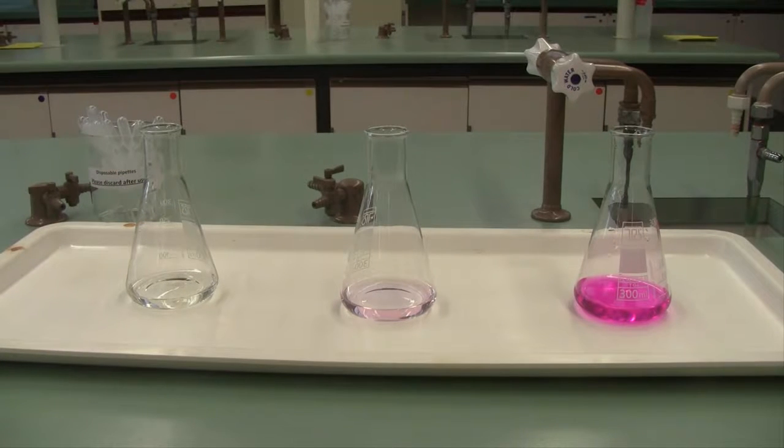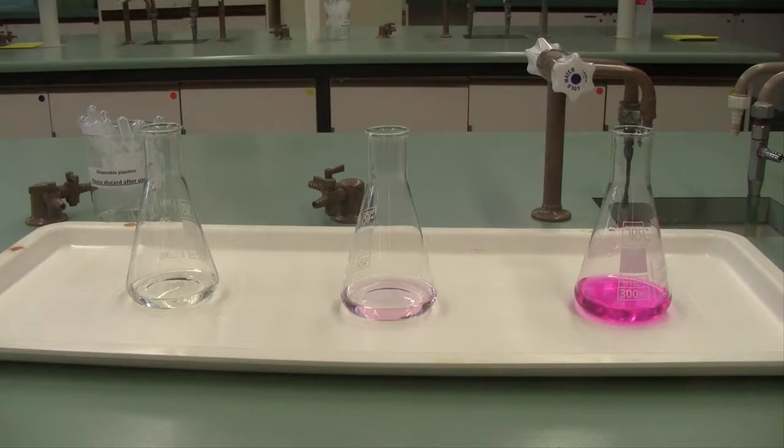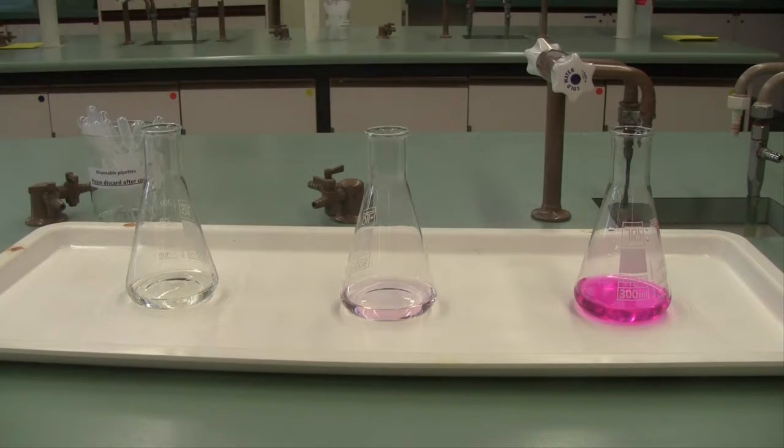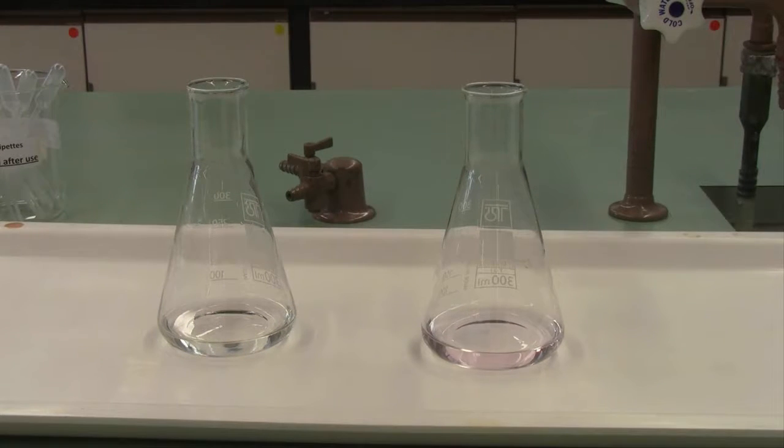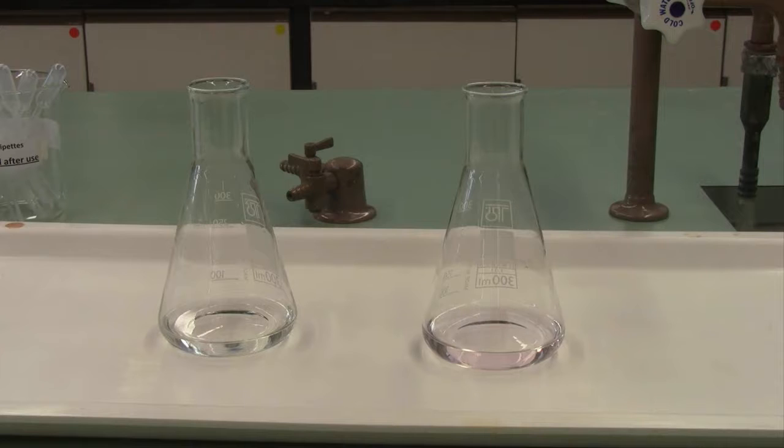The indicator is colorless to begin with. The faint light pink color in the middle is the color you're aiming for, and the bright pink at the end indicates that you have overshot the endpoint. So again emphasizing you want that first permanent faint light pink color to show you you're at the end of your titration.